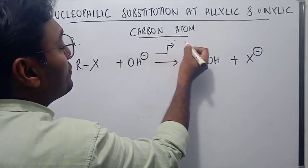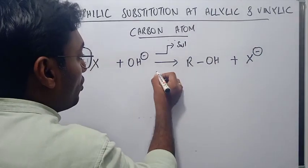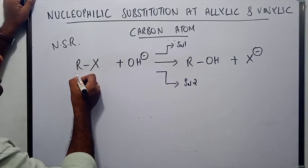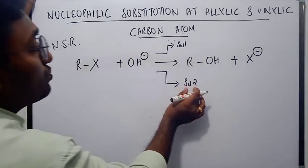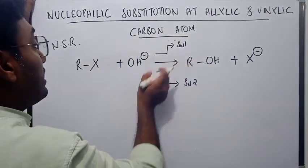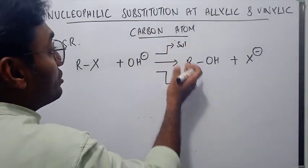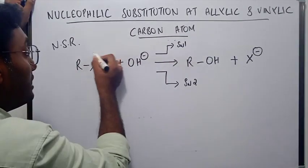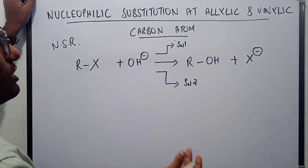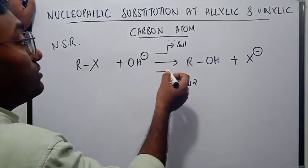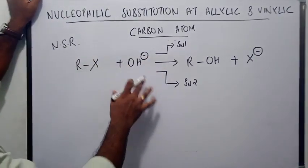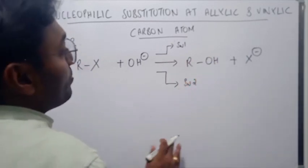This reaction can proceed through either of two routes: the SN1 route or the SN2 route. That route depends primarily upon the kind of substrate used. If it is a primary substrate it will go through the SN2 route, and if it is a tertiary substrate it will go through the SN1 route. Other factors also determine the pathway: the nature of the leaving group, the nature of the nucleophile, the type of solvent, and the temperature of the reaction system.